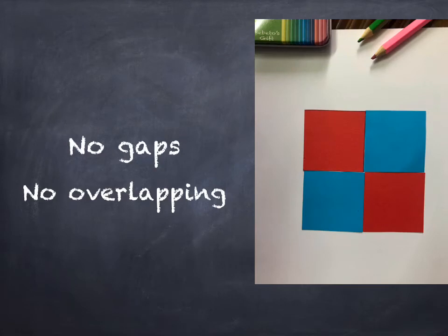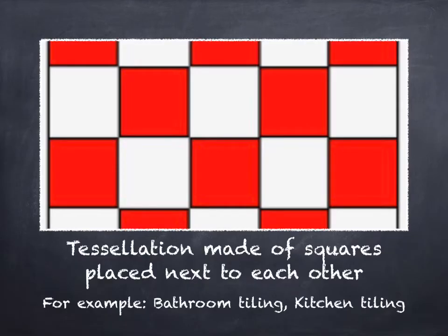Observe, you can see that there are no gaps or overlapping. If we keep placing squares next to each other, it looks something like this.